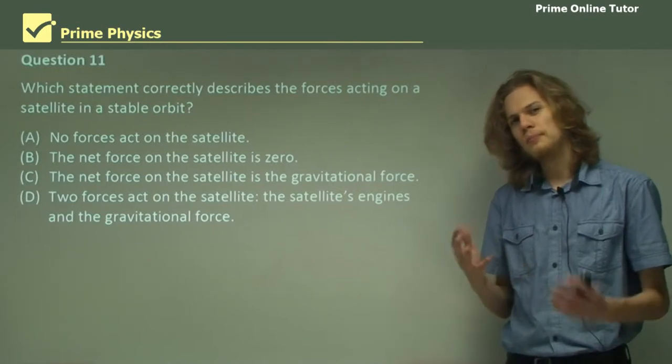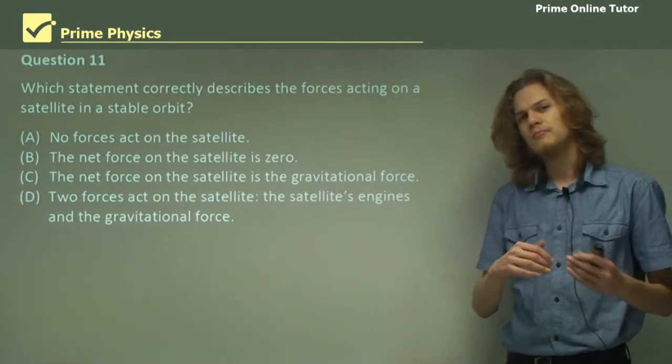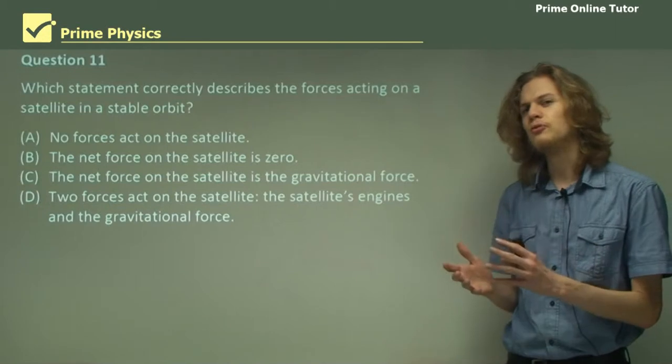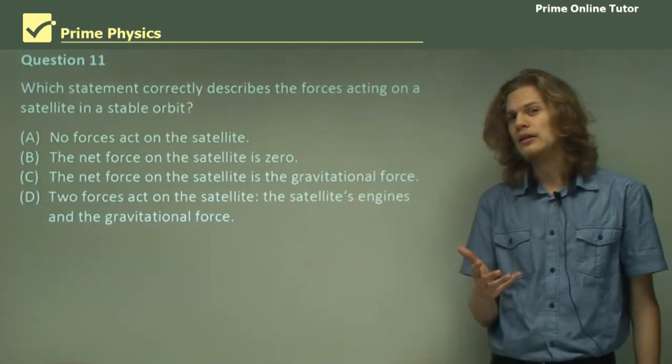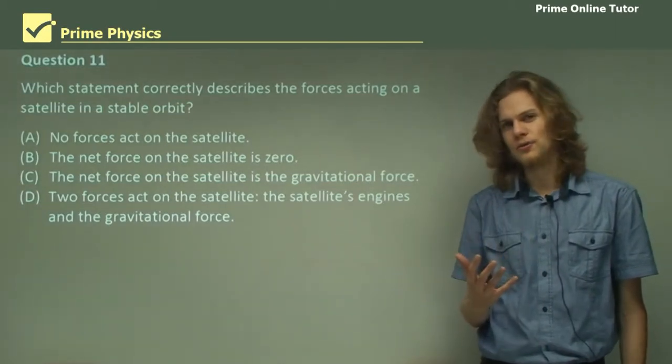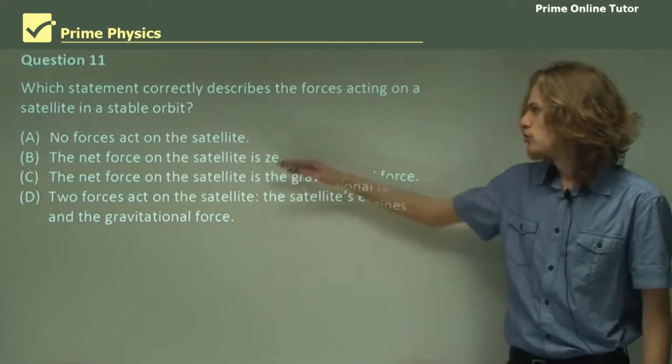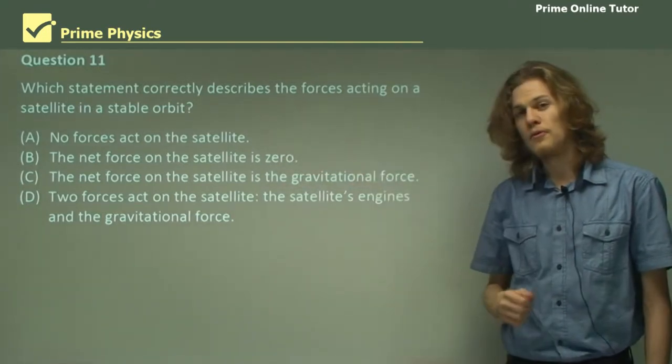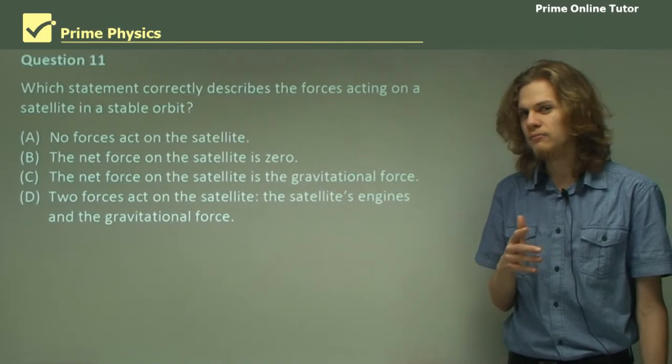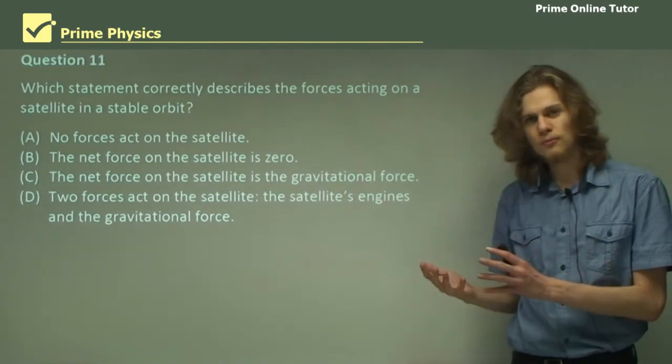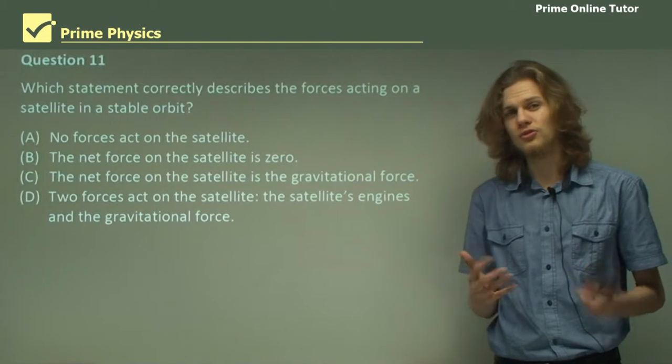Now when there's an object in orbit, the only force acting on it is a centripetal force. It might feel weightless but that's just because there's no reaction force. So A and B are wrong. There is a force acting on the satellite. Otherwise it wouldn't travel in a circle. It's constantly accelerating toward the middle of the circle.